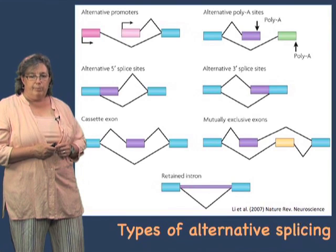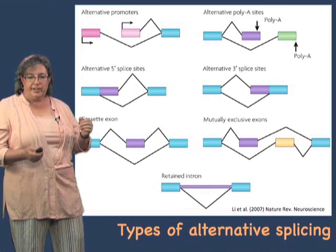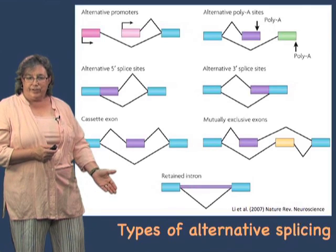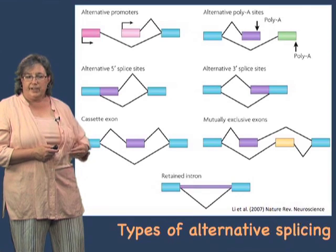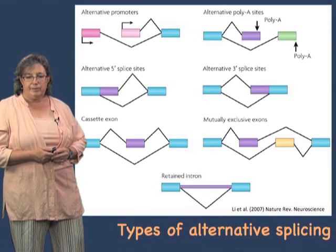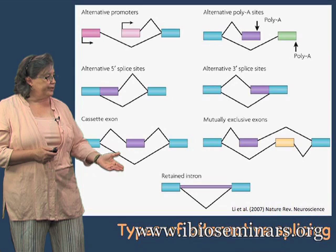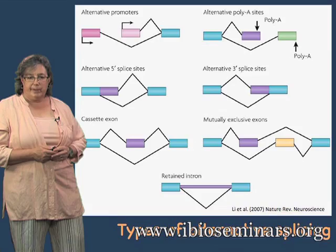There are mutually exclusive exons where either one exon is put in or the other, but not both. The simplest form of alternative splicing is to not splice at all — you can splice or not splice, and that would be a retained intron. So there are many different types of alternative splicing. The most common type is the cassette exon, where an exon is either spliced in or spliced out.